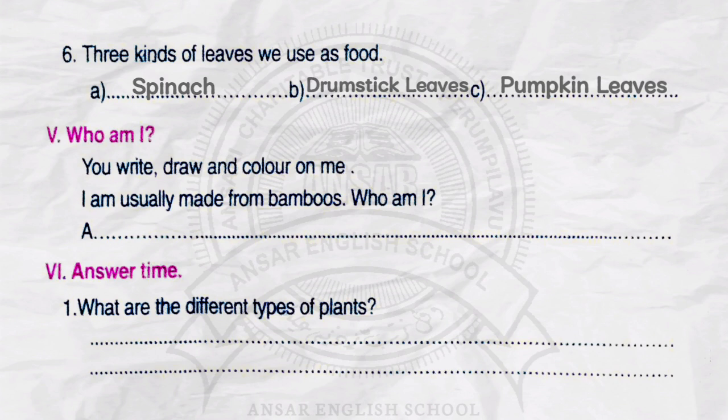Exercise number 5. Who am I? You write, draw, and color on me. I am usually made from bamboos. Who am I? Answer: Paper.